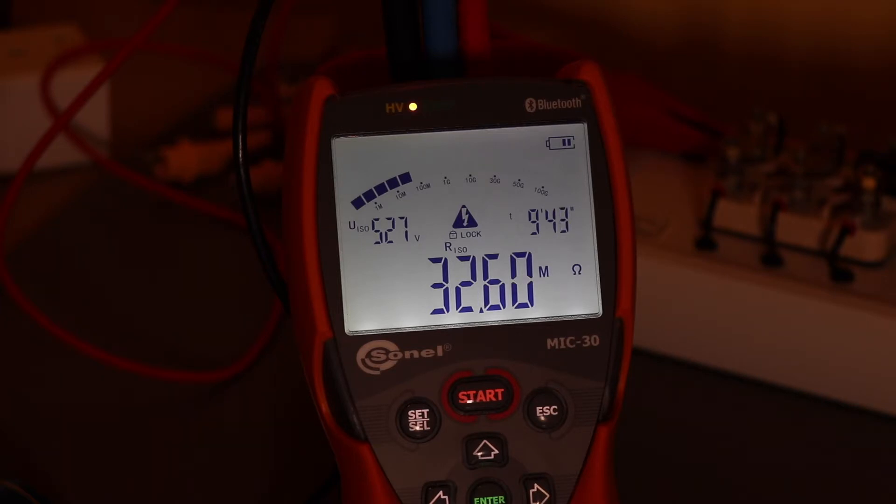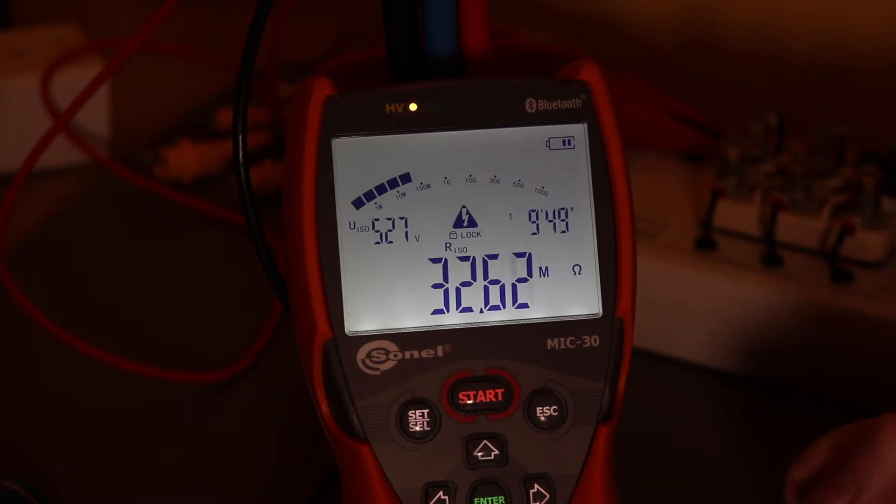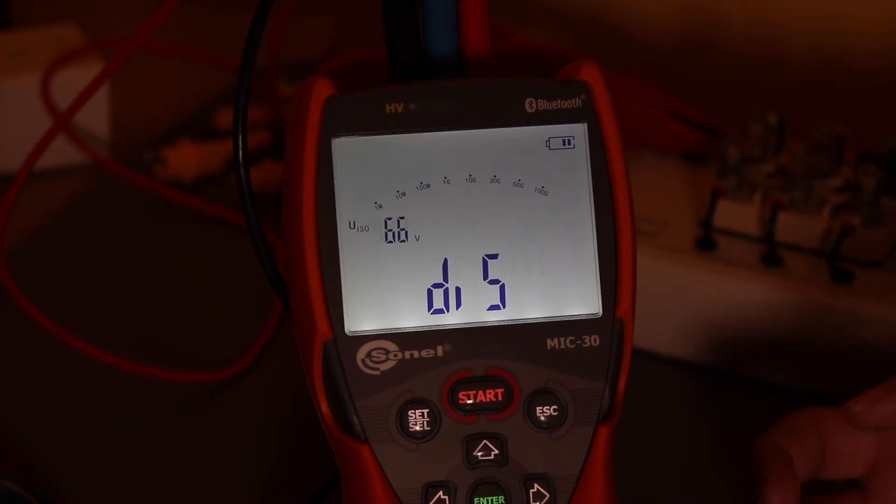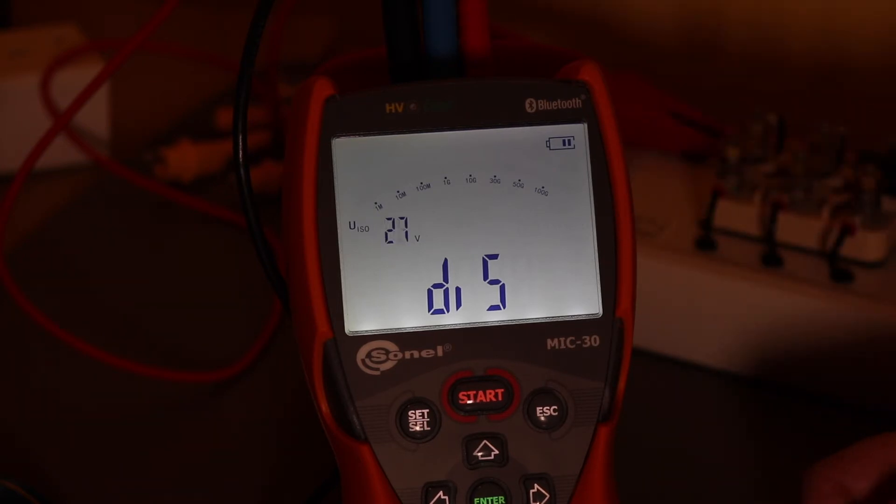And what I will do, this meter, as I do all the insulation testers these days, go into a discharge to get rid of any residual voltage after the test. And what this particular meter does is it will monitor that and it will go into alarm mode. So there's the final test. It's finished that. It's gone into a discharge. And in a few seconds time, it won't have discharged quickly enough. And it will move into a voltage detect mode.